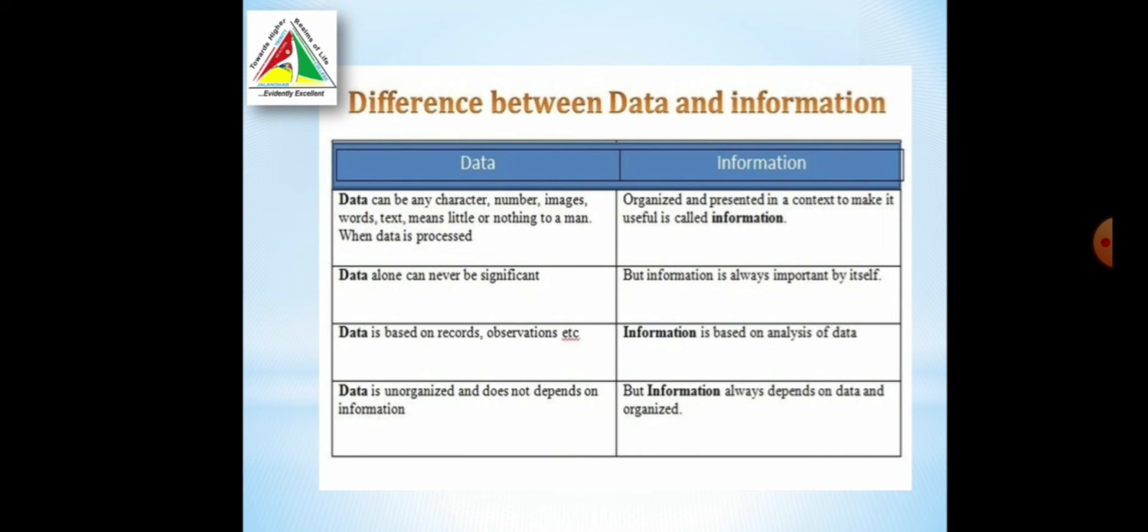Now, we can see what is the difference between data and information. We have already learned what is data and what is information. Data is the raw fact. It can be a character, a number, or an image. Anything which we give to the computer. But, information is organized or processed data. After processing the data, what we receive, that is called information.